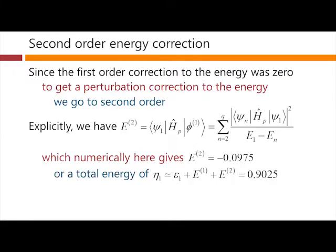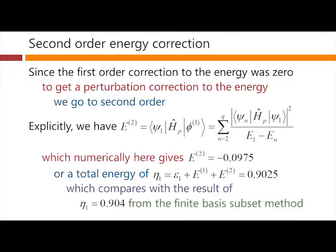And the numerical answer to this calculation is minus 0.0975 for three units of field. Or that means a total energy of the unperturbed state, which is an energy of one unit, plus the first-order correction, well, that was zero, plus the second-order correction, this number here. So that gives us 0.9025. And that compares with our result of 0.904 from the finite basis subset method, for example.